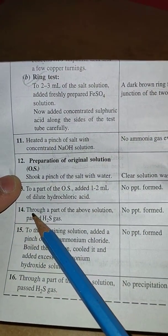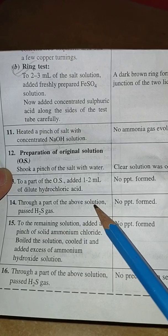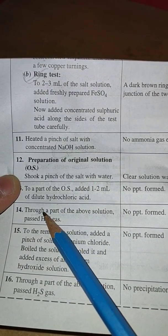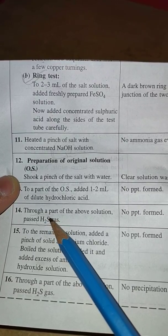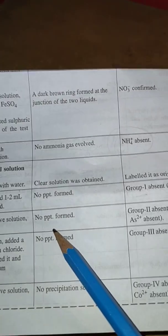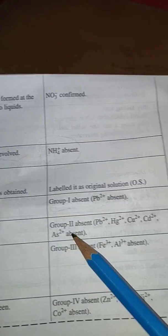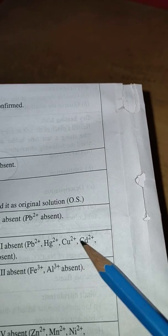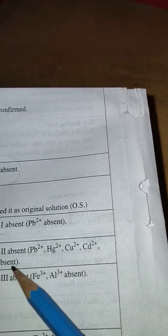Next part, that is 14th stage: through a part of the above solution pass H2S gas. I have already told you how to prepare H2S gas in the Kipp's apparatus. No precipitate formed. Group two, that is Pb²⁺, Hg²⁺, Cu²⁺, Cd²⁺, and As³⁺ is absent.